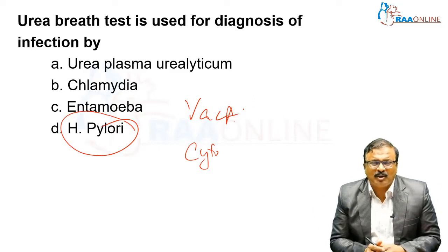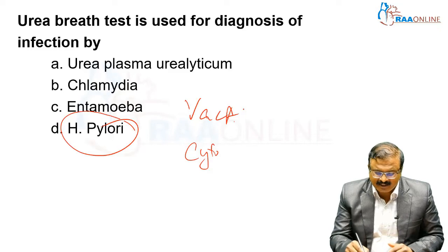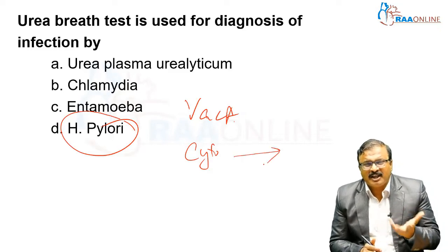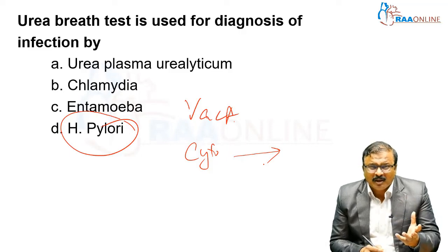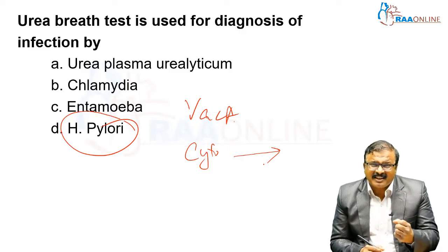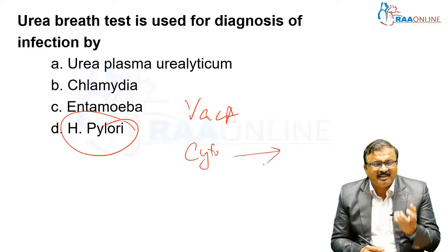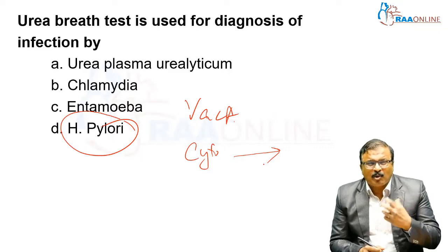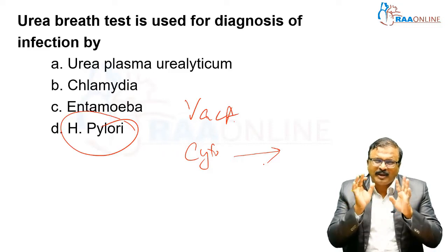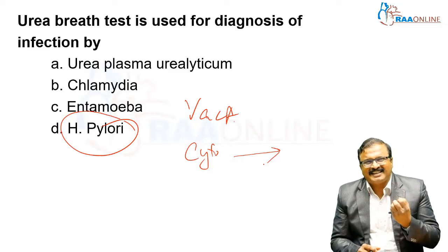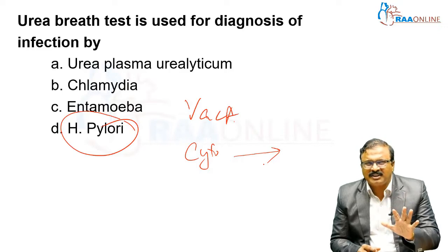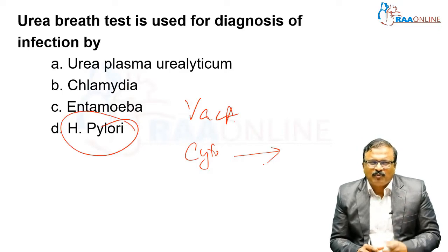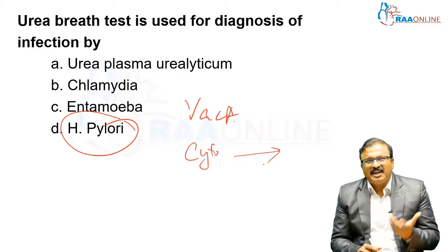Chronic H. pylori infection can produce atrophic gastritis which can lead to malignancies. H. pylori-specific stains include Warthin-Starry stain and Giemsa stain. Treatment involves triple therapy or quadruple therapy. The urea breath test is a screening test, not a diagnostic test — it is used in community settings to find out the prevalence of H. pylori.